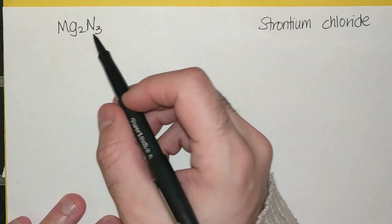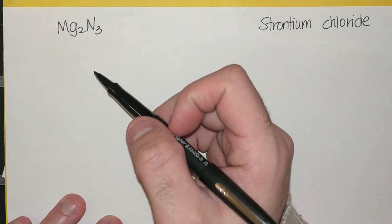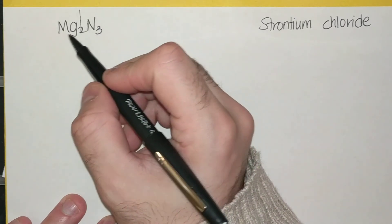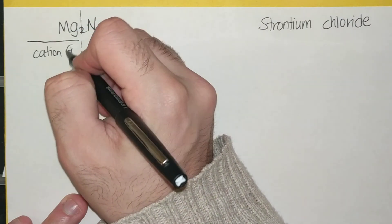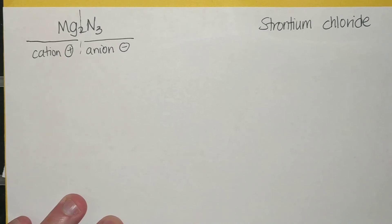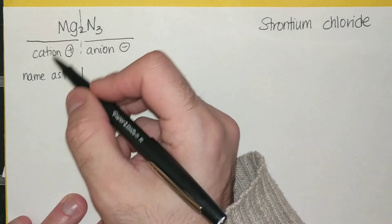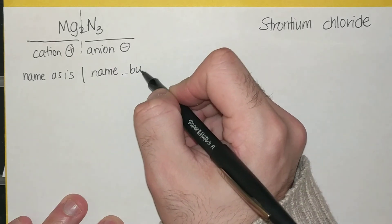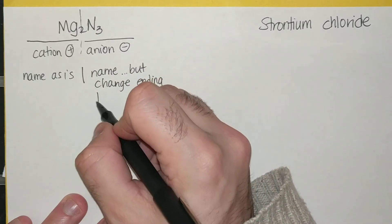So let's start on the left here with MG2N3. There are two to three basic rules on how to name these ionic compounds. First, you have to realize that there are two element symbols here. On the left side I typically have the cation, which is positive charge, and on the right side I have the anion, which will be negatively charged. So typically I name the cation as is, and then I name the anion but change the ending to IDE.